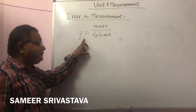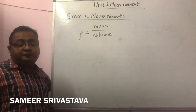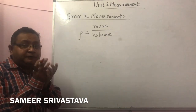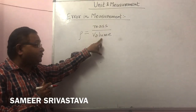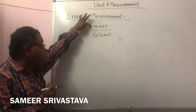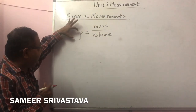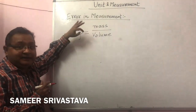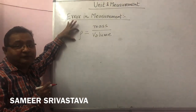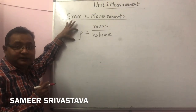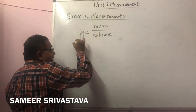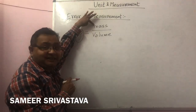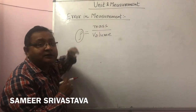Density of a metal block depends upon mass upon volume of that block. So if we want to measure the density of any block, we first need to measure the mass of that block as well as the volume of that block. If these two properties are accurate, then we get the density of that block accurately.